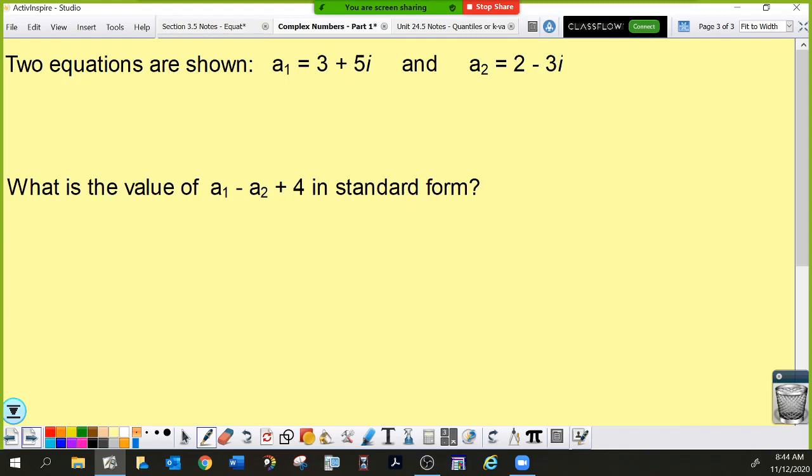It says two equations are shown. But in all actuality, it's just two complex numbers. I've given you two complex numbers. The first one, a sub 1. And the a sub 1 is its name. A sub 2 is a name. So, I'm just telling you the first complex number is 3 plus 5i. And the second complex number is 2 minus 3i. What is the value of the first complex number minus the second complex number plus 4? You just plug it in. But you should probably use parentheses to make sure you don't goof it up. Whenever you substitute, you should probably be using parentheses. So, 3 plus 5i minus parentheses 2 minus 3i parentheses plus 4.